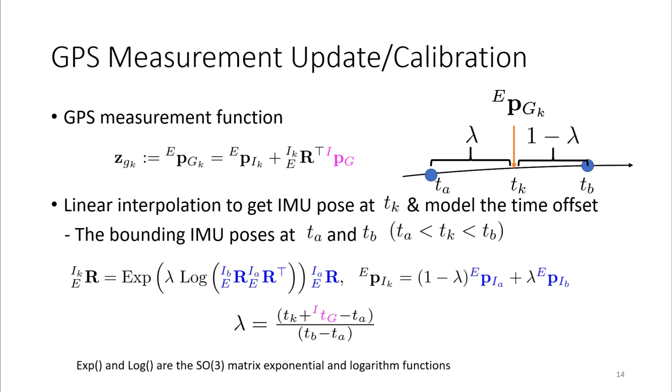We solve the problems by linear interpolation. We interpolate the two bounding IMU poses of the GPS measurement to get the IMU pose at the GPS measurement time. The ratio lambda is decided by the temporal difference between the measurement and two other IMU pose times.